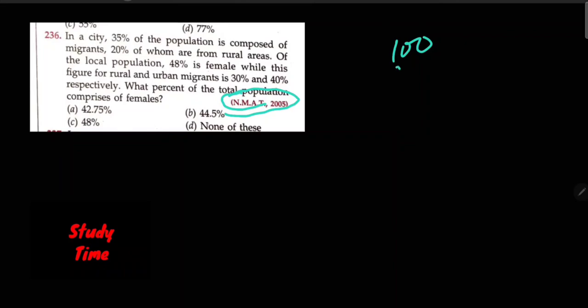This means migrant and local. Migrants are 35%, so the rest, 65%, is local population in the city.